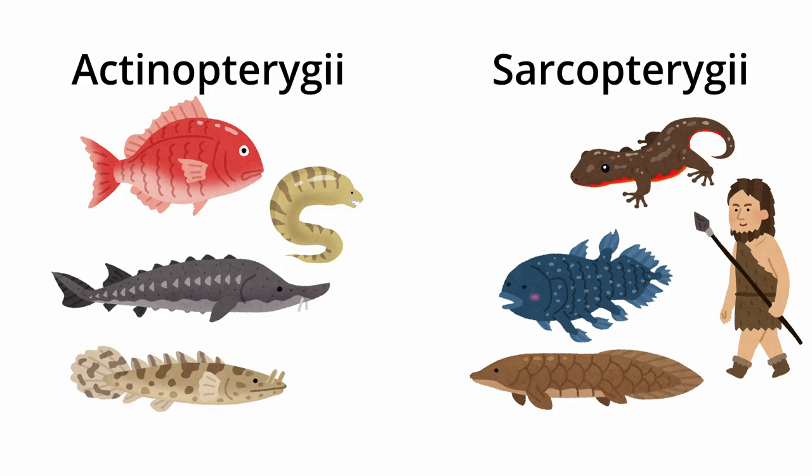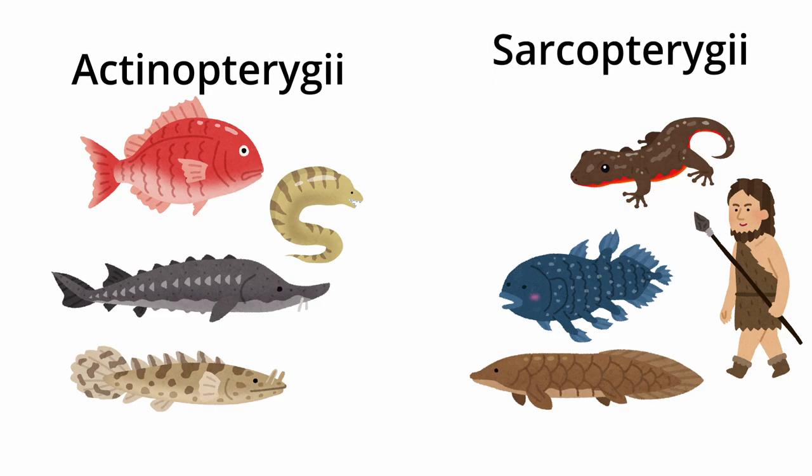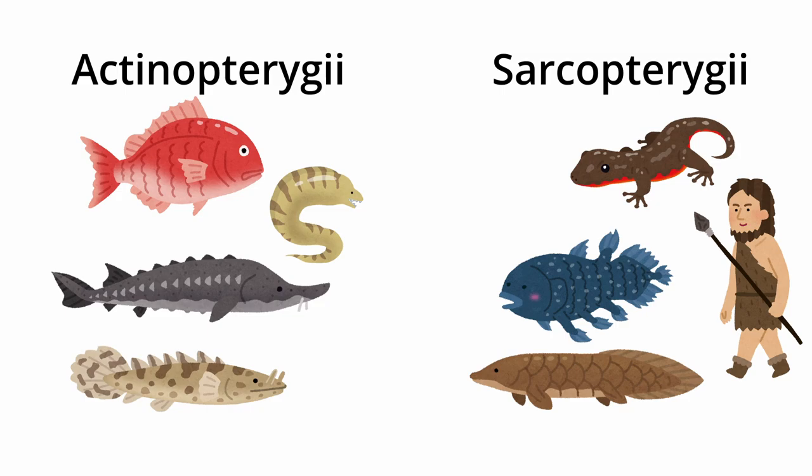Usually, the normal or conventional fish are categorized into the Actinopterygians. We are Sarcopterygians. The Sarcopterygians have arms or legs with muscles, while Actinopterygians have arms and legs that are just fin rays — they are ray-fin fish. The Sarcopterygians have flesh and muscle in their legs and arms.